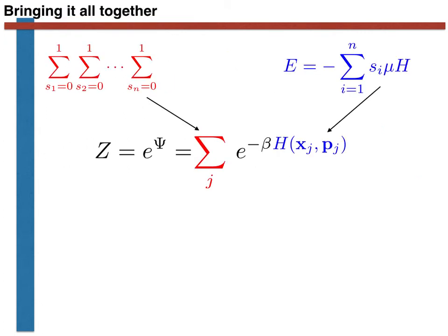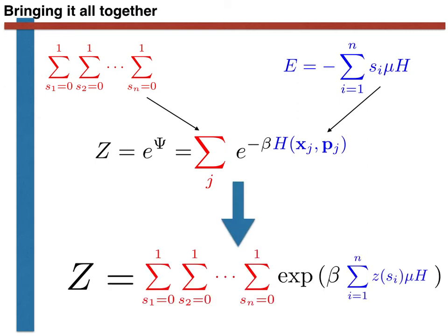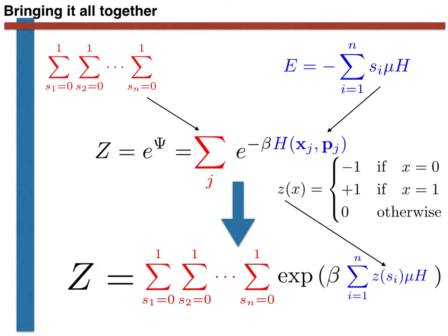Let's now insert the sum over microstates and the Hamiltonian into our expression for the canonical partition function. As promised, all parts to do with the sum over microstates will be kept in red, and all parts to do with the Hamiltonian in blue in the final expression. The final expression we arrive at is shown here. I like to use the function z to map the numbers in the sum, which are 0 and 1, onto the spin values minus 1 and plus 1 as shown here.